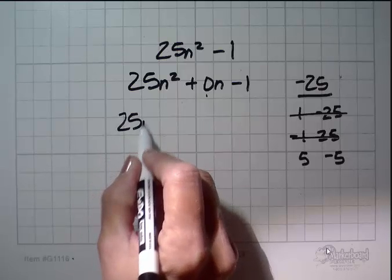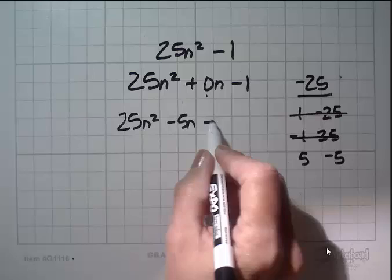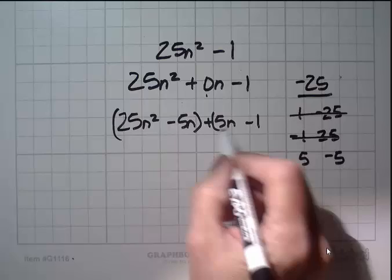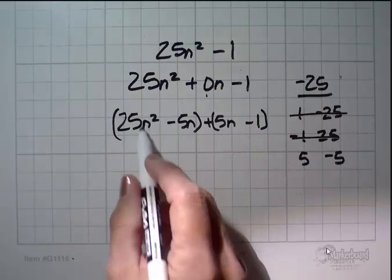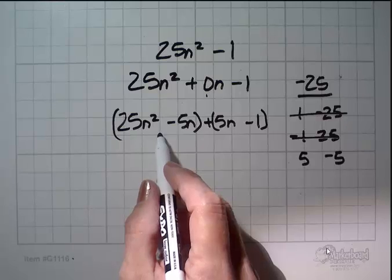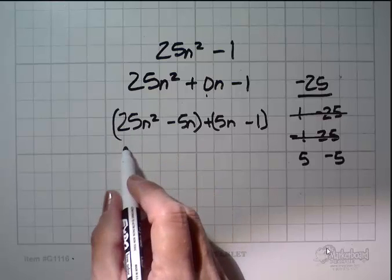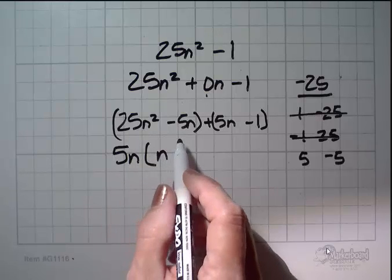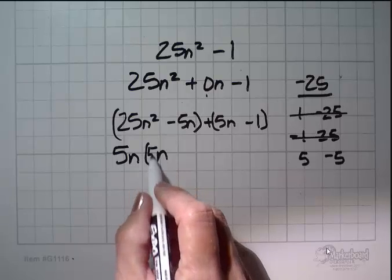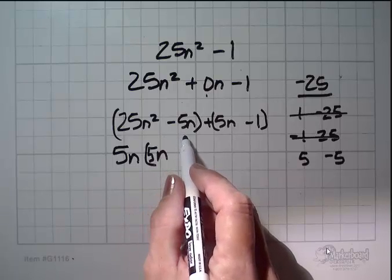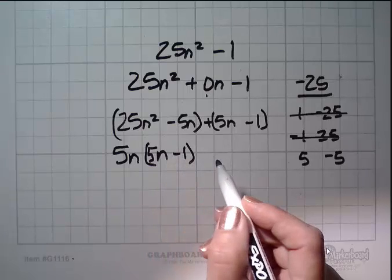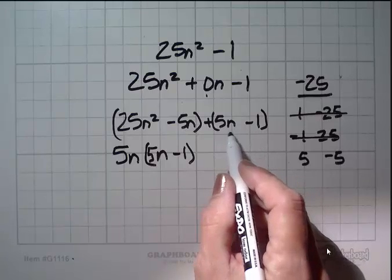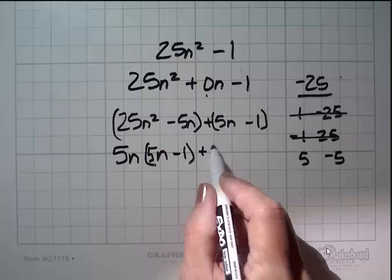So I'm simply going to rewrite this again. 25n squared minus 5n plus 5n, because that gives me 0, minus 1. I'm going to put it in two sets of parentheses, and I'm going to see what can I factor out of 25n squared minus 5n. And it seems to me that I can factor out 5n. If I do, 25n squared becomes 5n, and negative 5n becomes minus 1.